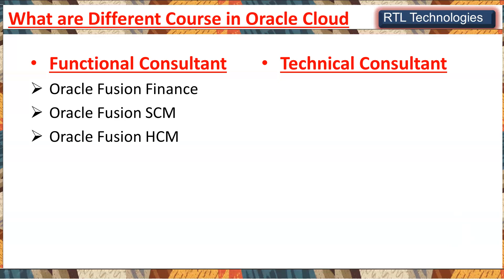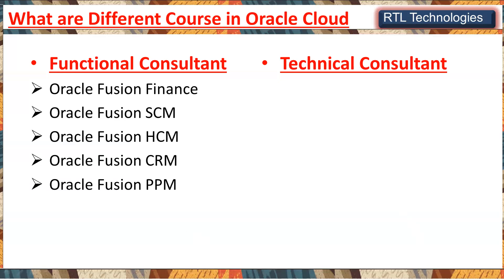The next major course is Human Capital Management (HCM) — one of the most successful products in Oracle Cloud, with great client feedback. People who have done MBA HR or are already working as a recruiter, HR manager, or in onboarding are well-suited for this. Graduates and postgraduates interested in moving into HCM can also apply — there are huge job openings. CRM (Customer Relationship Management) is another option preferred by sales people, but it has fewer job opportunities compared to Supply Chain and HCM.